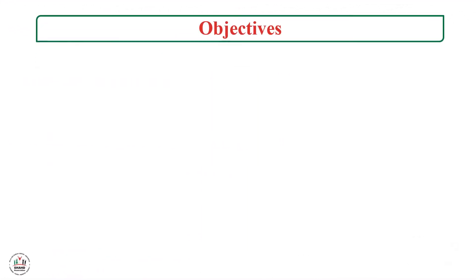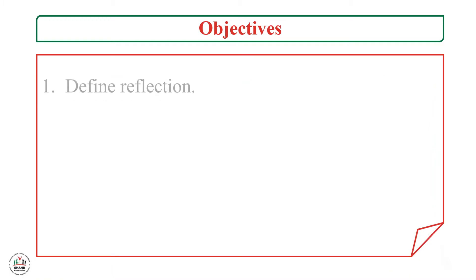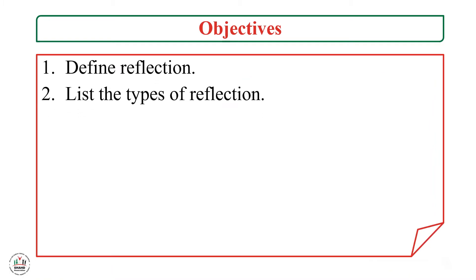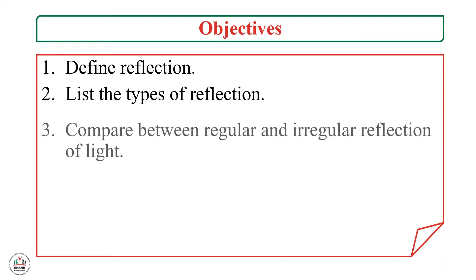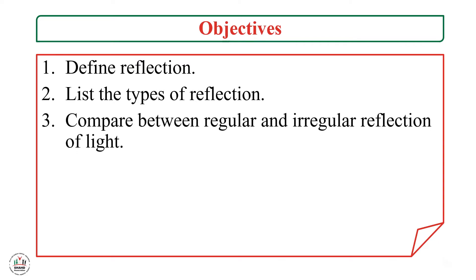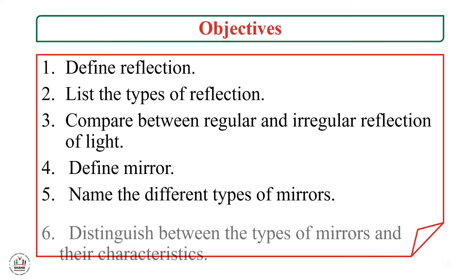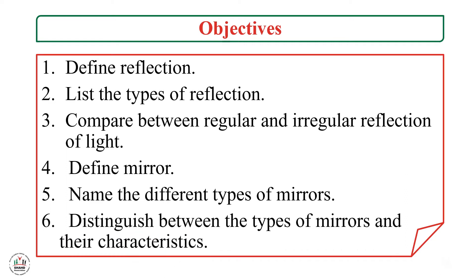The objectives for this lesson are: first, to define reflection; second, to list the types of reflection; third, to compare between regular and irregular reflection of light; fourth, to define a mirror; fifth, to name the different types of mirrors; and finally, to distinguish between the types of mirrors and their characteristics.